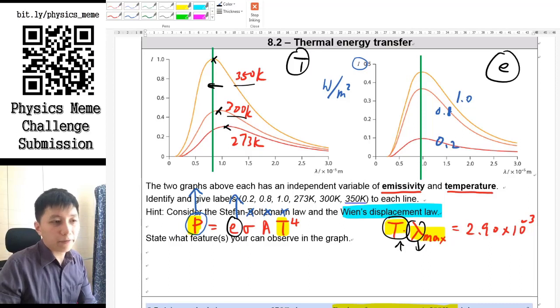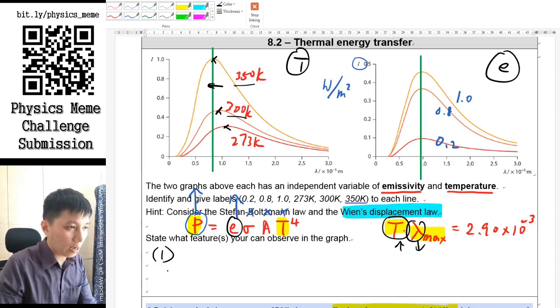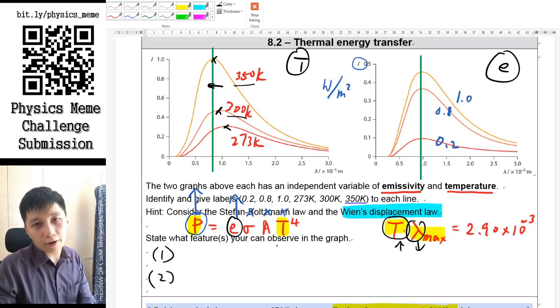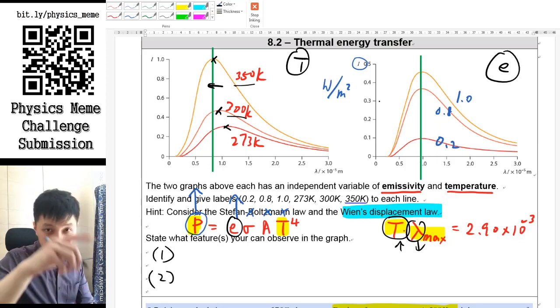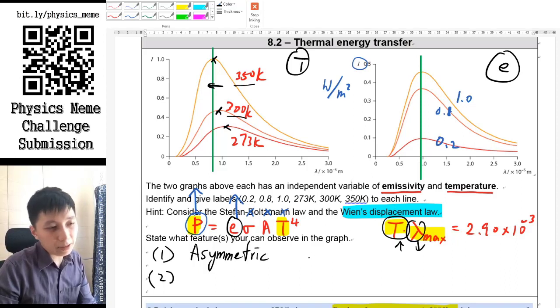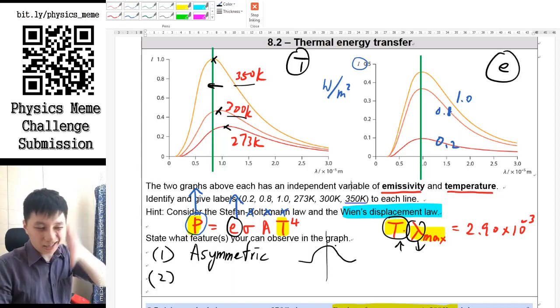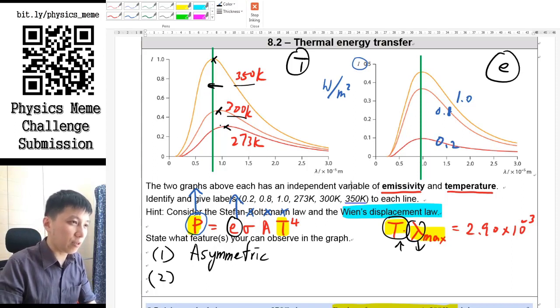Apart from the two we mentioned we can deduce from the equation, there are two other observations of the pattern we can see from the graphs. The first thing is if you try to look at the shape of the whole curve, you'll find out it's actually asymmetric. That means it is not symmetrical like in statistics normal distribution.